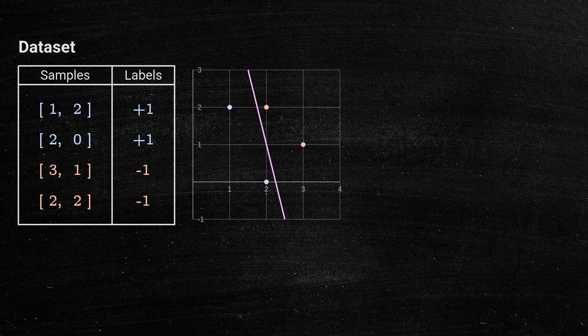We want to build a hyperplane that separates the samples labeled minus one from those labeled positive one. Since we're working in a 2D space, this hyperplane translates to a simple line.